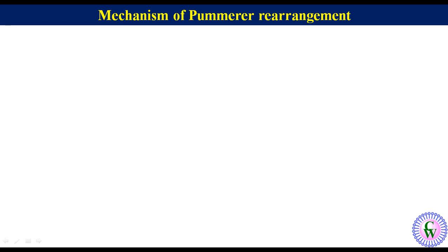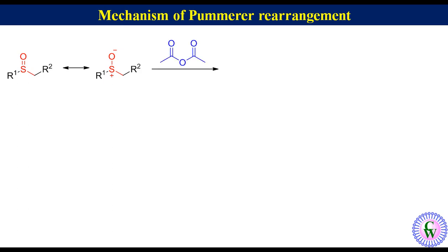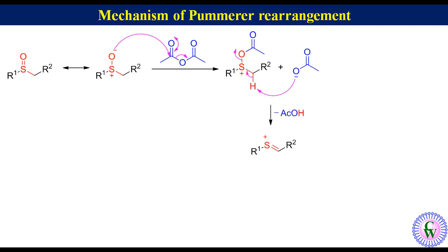Mechanism of Pummerer Rearrangement: This sulfoxide starting material has a resonating form with negatively charged oxygen and positively charged sulfur. Acetic anhydride reacts with the negatively charged oxygen to produce an acetoxy sulfonium ion and acetate ion. Elimination of acetic acid produces an alkylidene sulfonium ion and acetate ion. Addition of the acetate ion to the double bond then gives the alpha-acetoxy thioether.